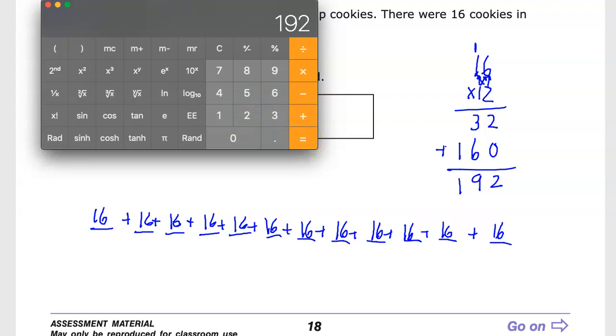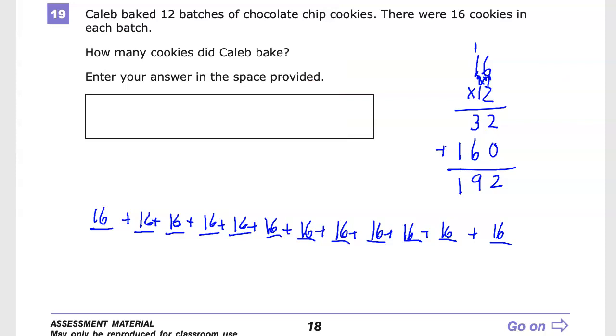But if I had missed any of those, it would have been a total disaster. So be wise, and when you have lots of adding, just do multiplication. The answer to number 19 is 192.